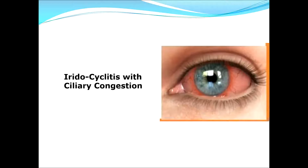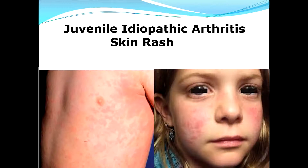Some children, especially in the oligoarticular category, have involvement of the eyes. There is ciliary congestion — congestion at the outer margin of the iris at the level of the ciliary body, with redness all over. This needs to be differentiated from conjunctivitis. This circumcorneal congestion around the ciliary body has an immune basis and is a frequent important finding in JIA. Some children also develop a macular, diffuse rash on the skin, trunk, and face.